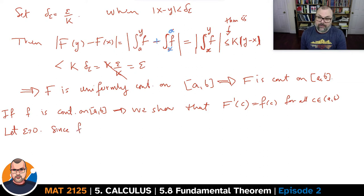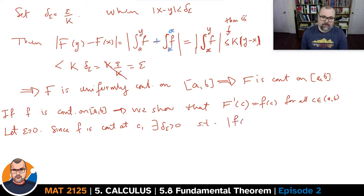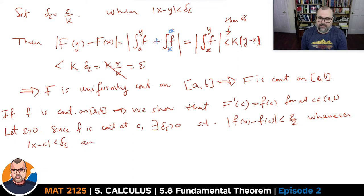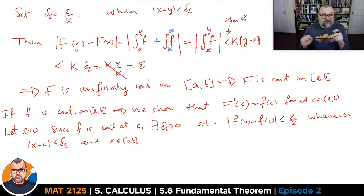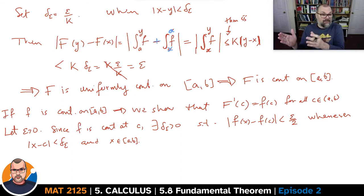Because little f is continuous by assumption, for little f at c we'll be able to find some delta-epsilon positive such that |f(x) − f(c)| is smaller than epsilon over 2 whenever |x − c| is smaller than delta-epsilon and x is in [a, b]. Basically, when x and c are close enough to one another, f(x) and f(c) will be close enough — you're specifying the degree of closeness.